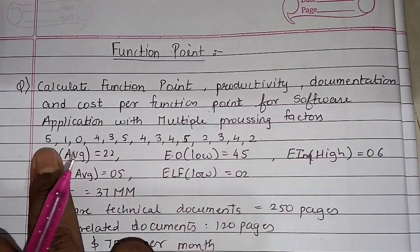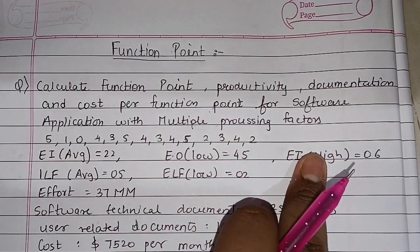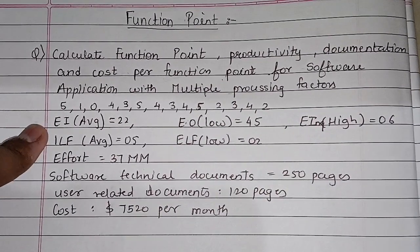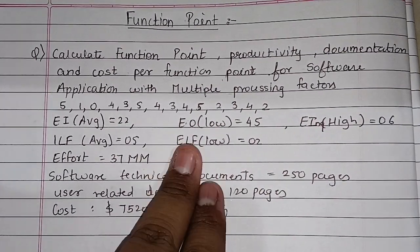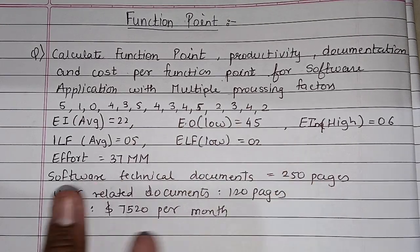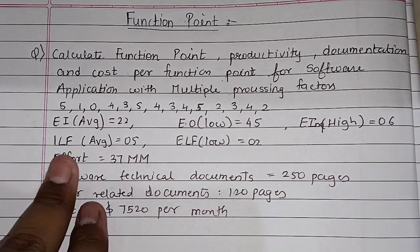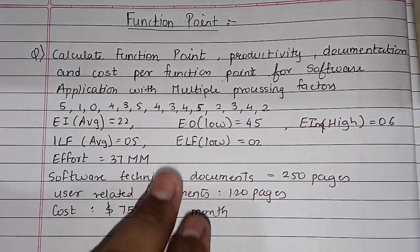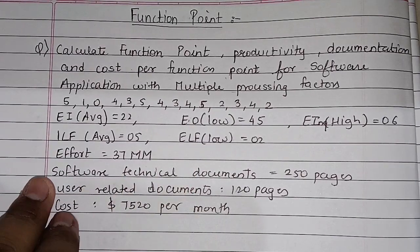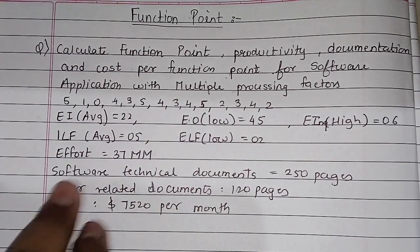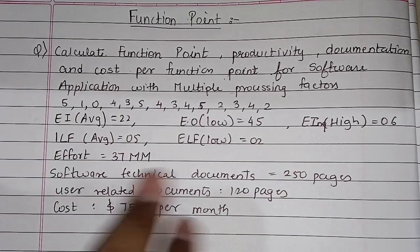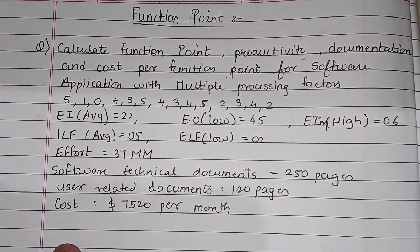These are the 14 processing factors. The given data includes: external input, external output, external inquiry, internal logical files, external logical files, effort, software technical documents, user related documents, and cost.